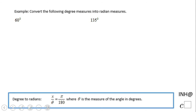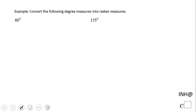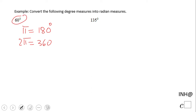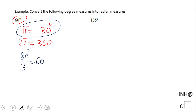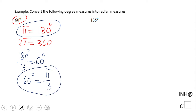60 is kind of a special angle, and I'm going to use a little bit of common sense. We know that pi means 180 degrees, or 2 pi means 360. Now, 60 — if you take a look — is one-third of 180, since 180 divided by 3 is 60. So basically, 60 degrees is nothing else than pi over 3.